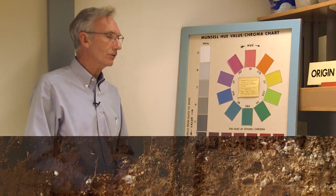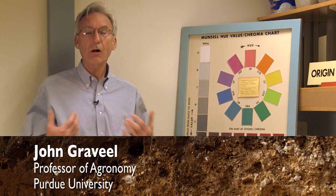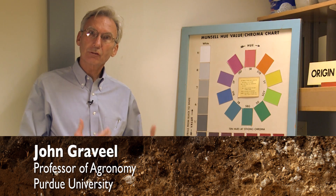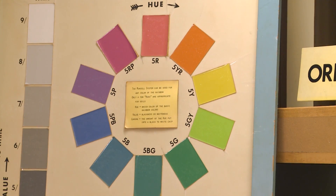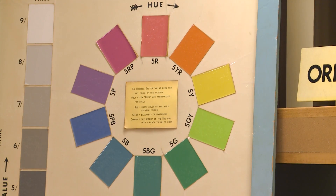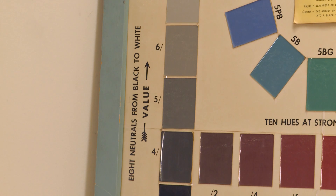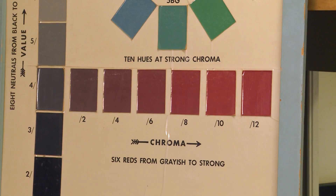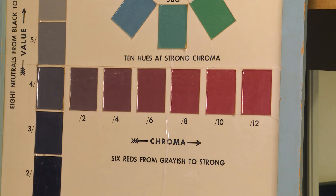The Munsell color code system is a system which describes all colors, not just soil colors, but all colors. There are three components to the Munsell color code system. It consists of the hue, which is the color of the rainbow; the value, the lightness or darkness of the chip; and the chroma, which imparts an intensity to the color of the chip that you're actually seeing.